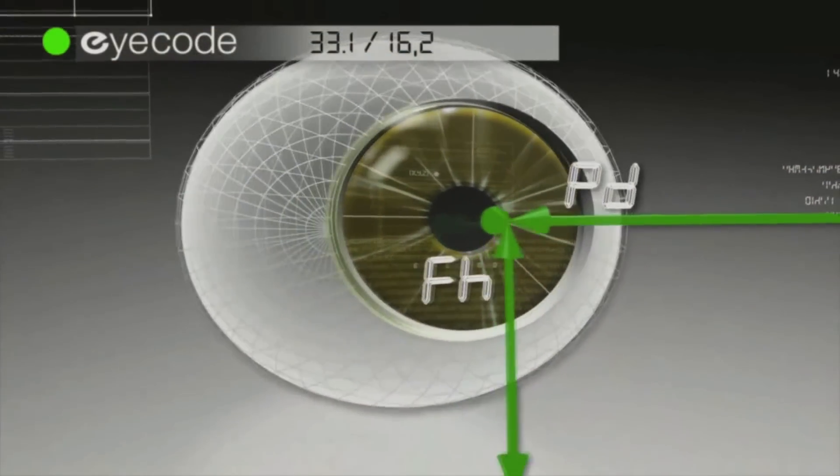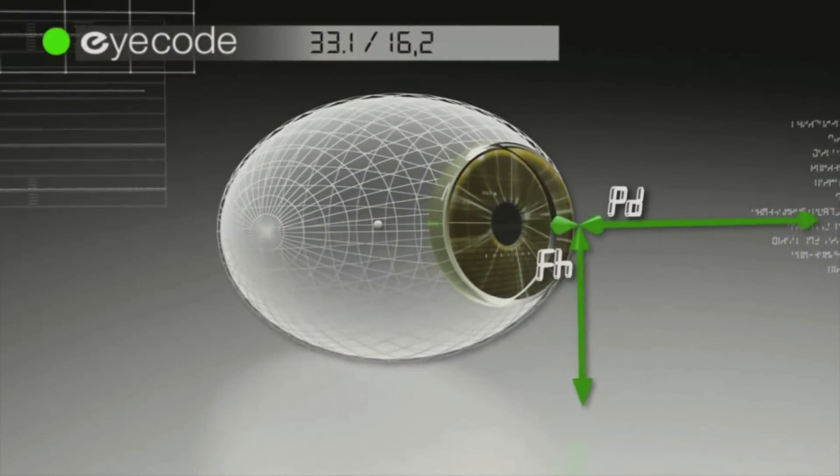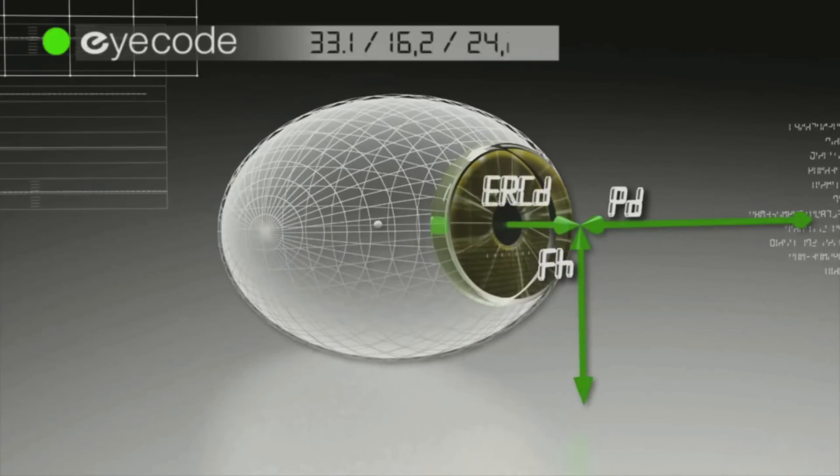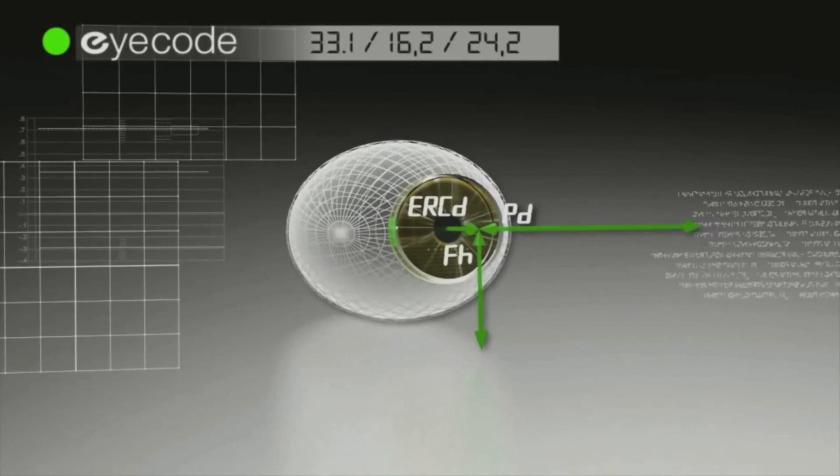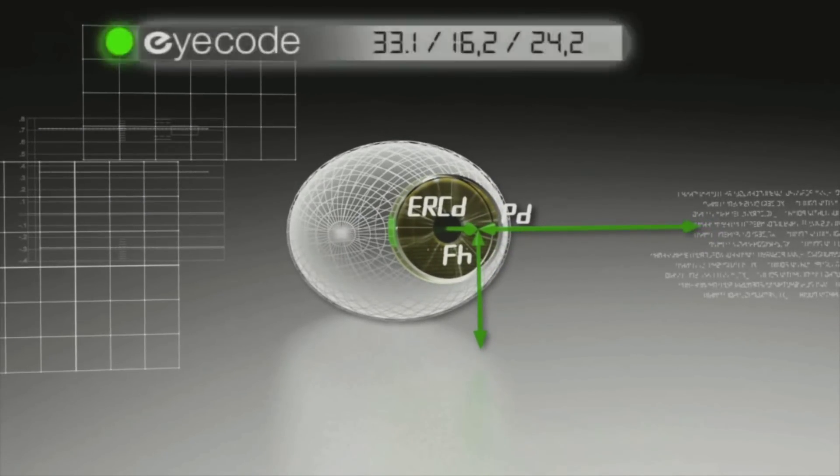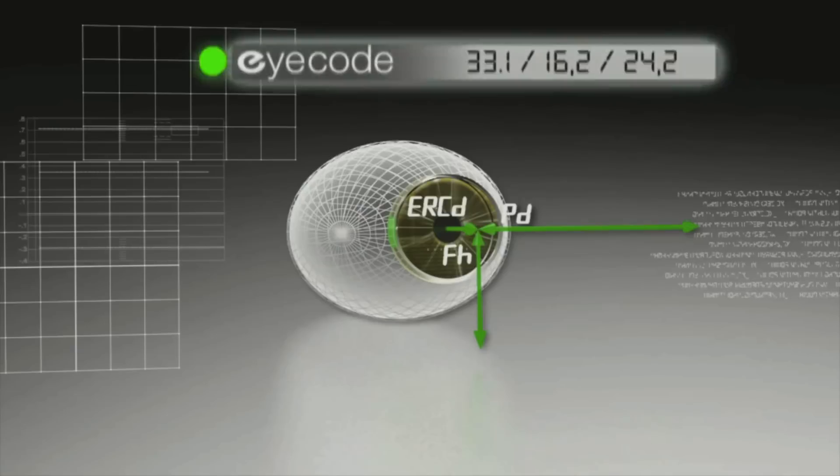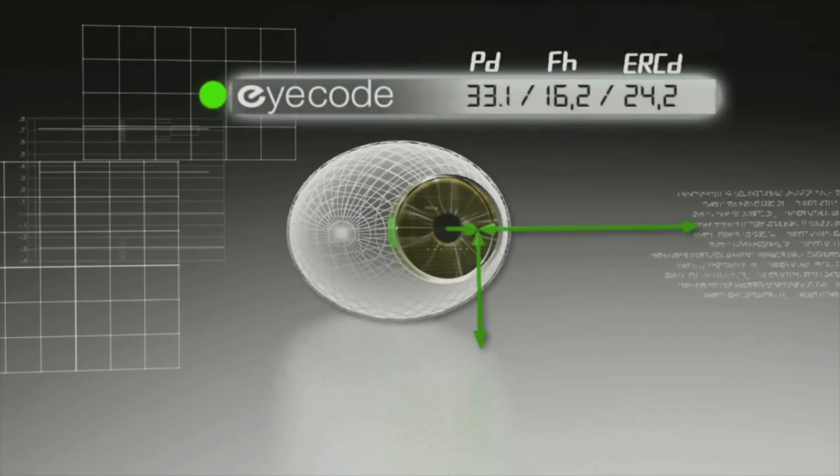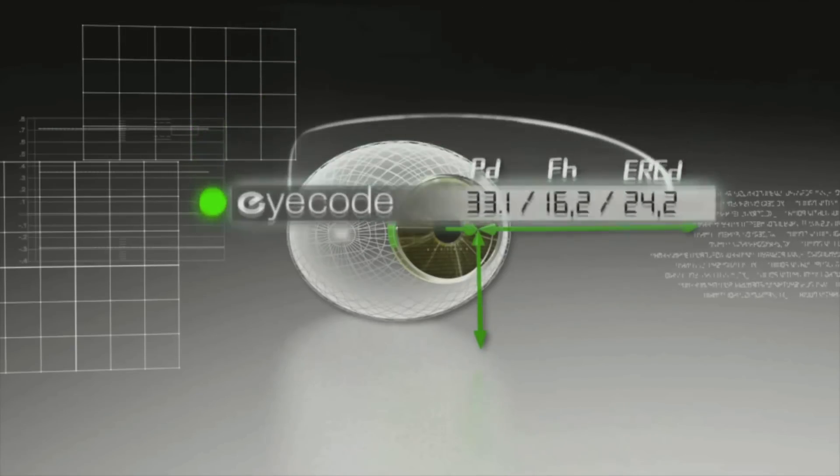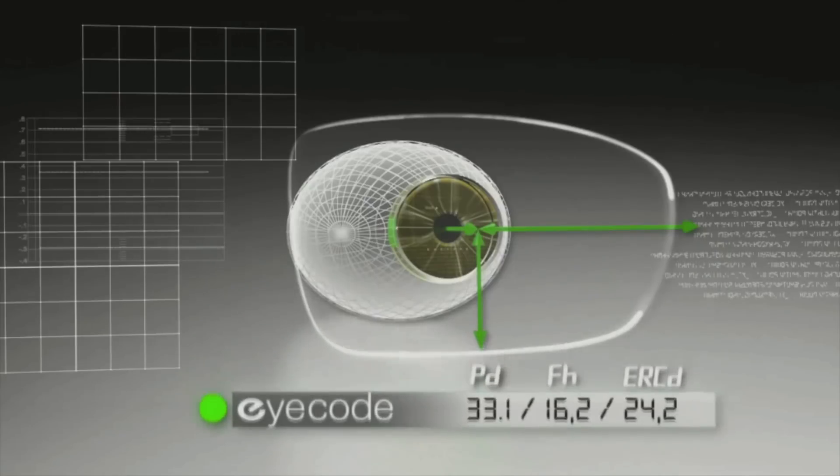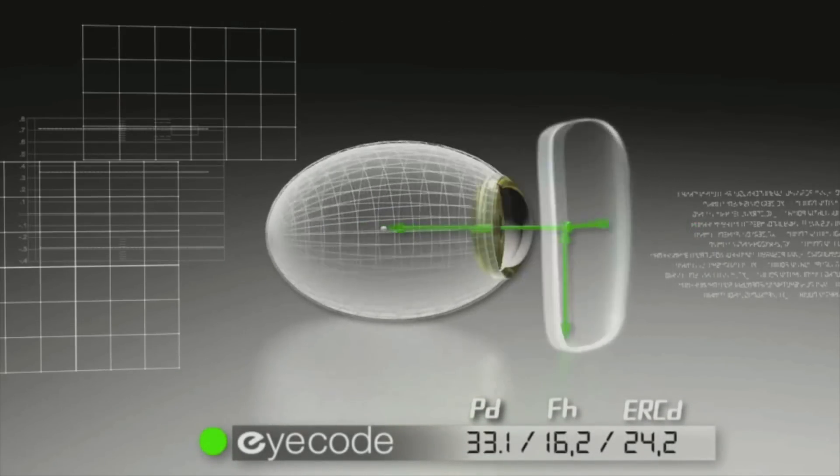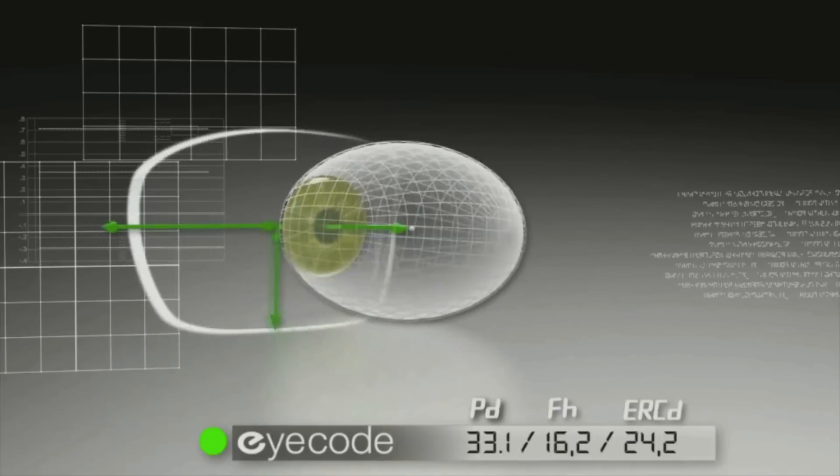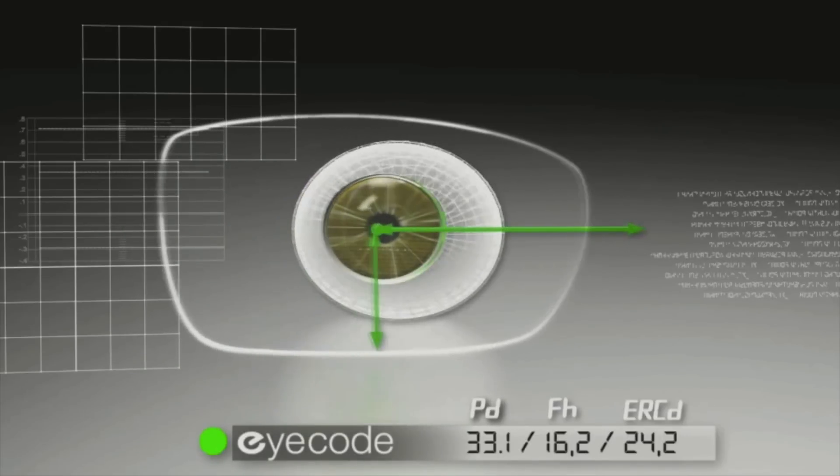The ERC is the new reference for pupillary distance and fitting height measurements. What was an approximate vertex distance is now replaced by the distance between the eye rotation center and the lens, called the ERC distance or ERCD. These three measurements—PD, fitting height and ERCD—build the very unique code of each eye, which forms the foundation of lens individualization based on the physiology of each wearer.